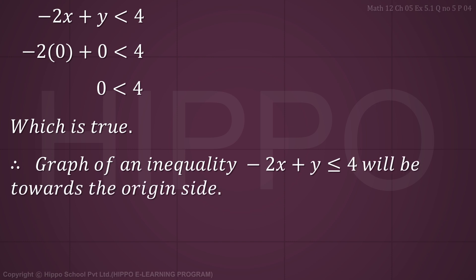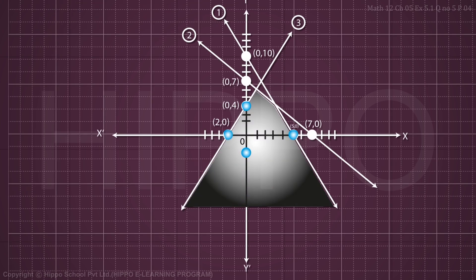Now draw the x-axis and y-axis, and plot the intercept points. Draw the three lines corresponding to equation 1, line 2, and line 3.